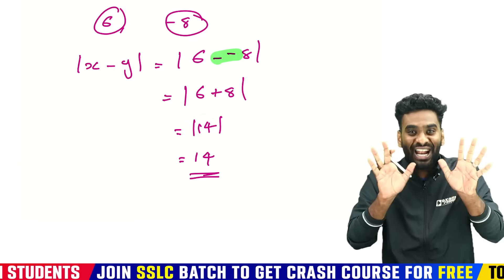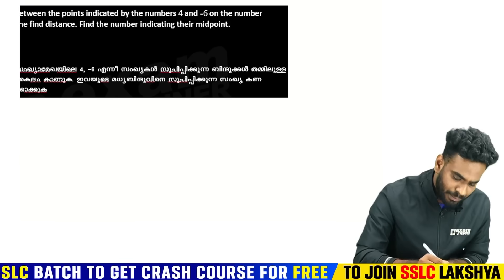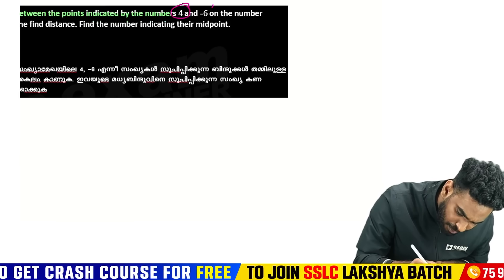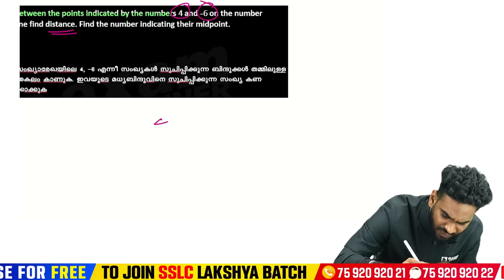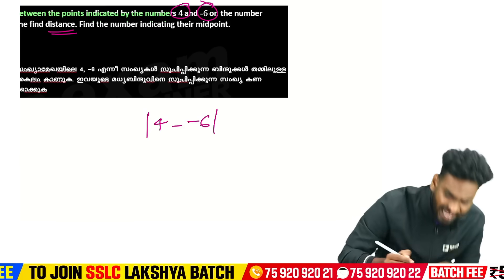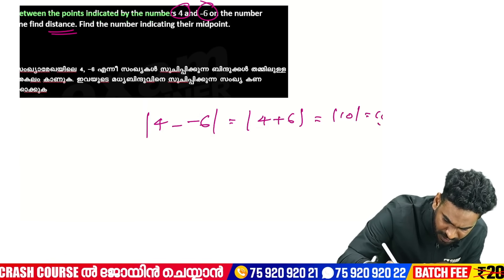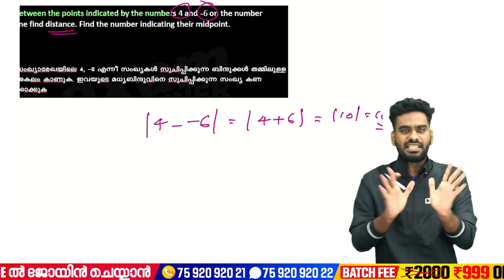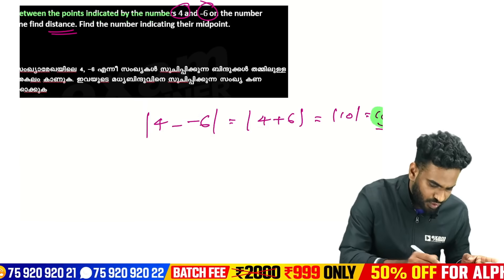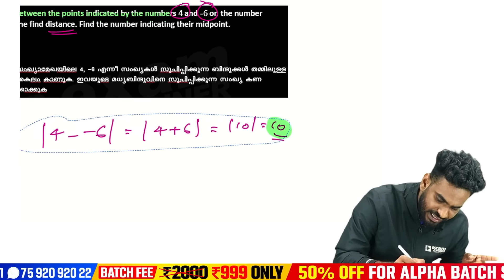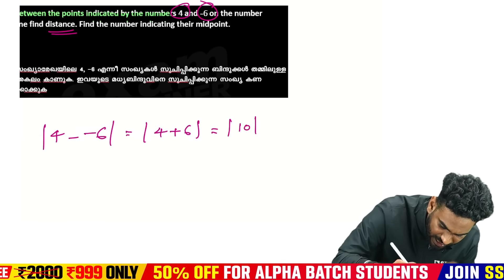The next question: find the distance between points 4 and minus r on the number line. That equals mod of 4 minus minus r, which equals modulus of 4 plus r, and that equals 10. So the distance is 10.